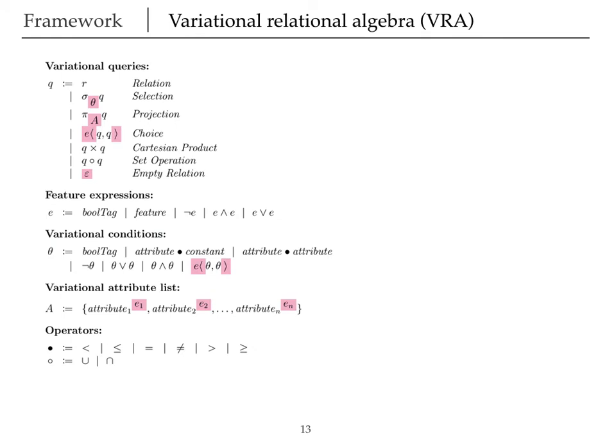Okay, now that we have variation in our framework, we also need to inject variation in our query language. We take relational algebra and extend it. First, for our projection, we now project attributes that are tagged with feature expressions. Second, we add choices. I'll explain what a choice is with an arithmetic expression.